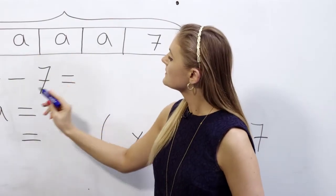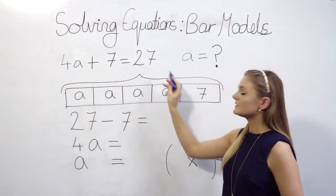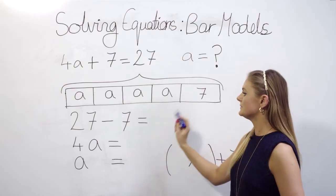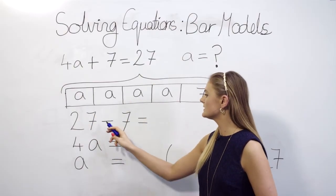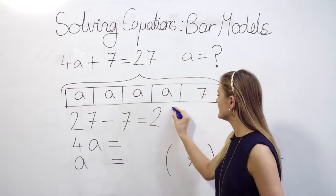We want to figure this out so we can use our known values 27 and 7 to help figure out the value of a. So 27 subtract 7 gives us 20.